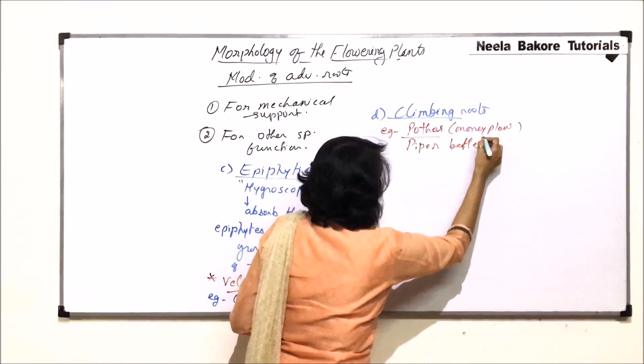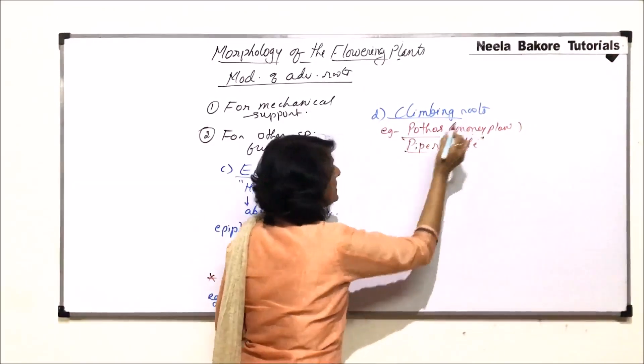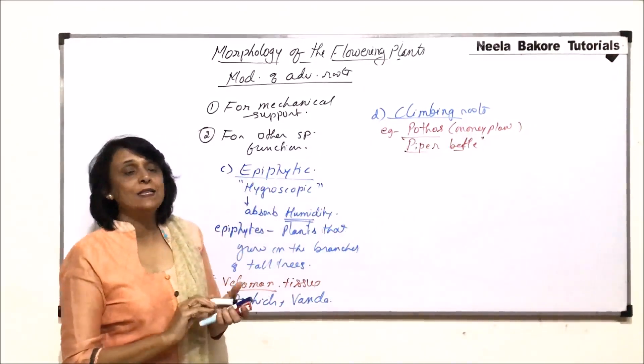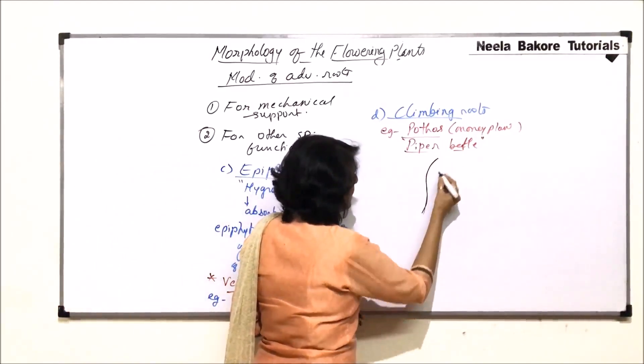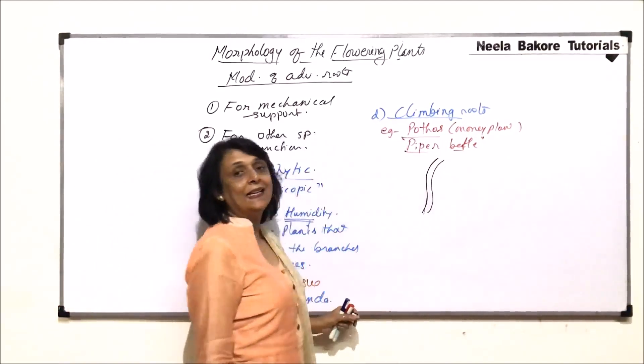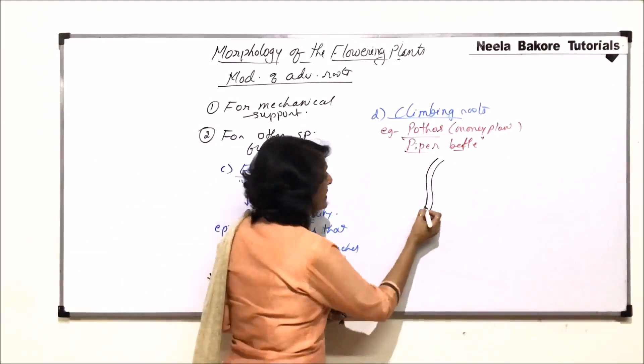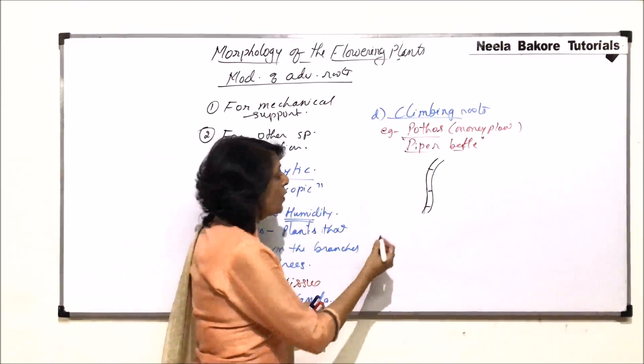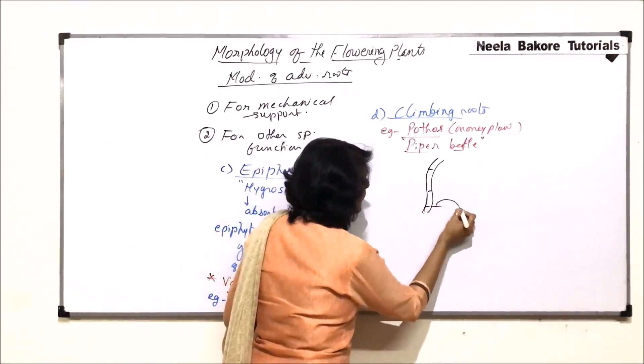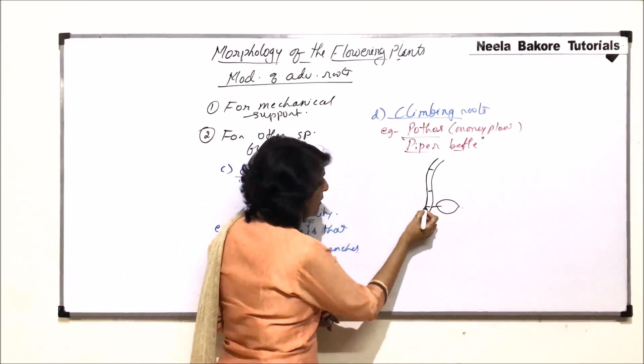Piper betel is another plant where we find these kind of roots. Now, how are these roots? When we see money plant, the stem is delicate and slender. And, there are distinct nodes and internodes which are visible.